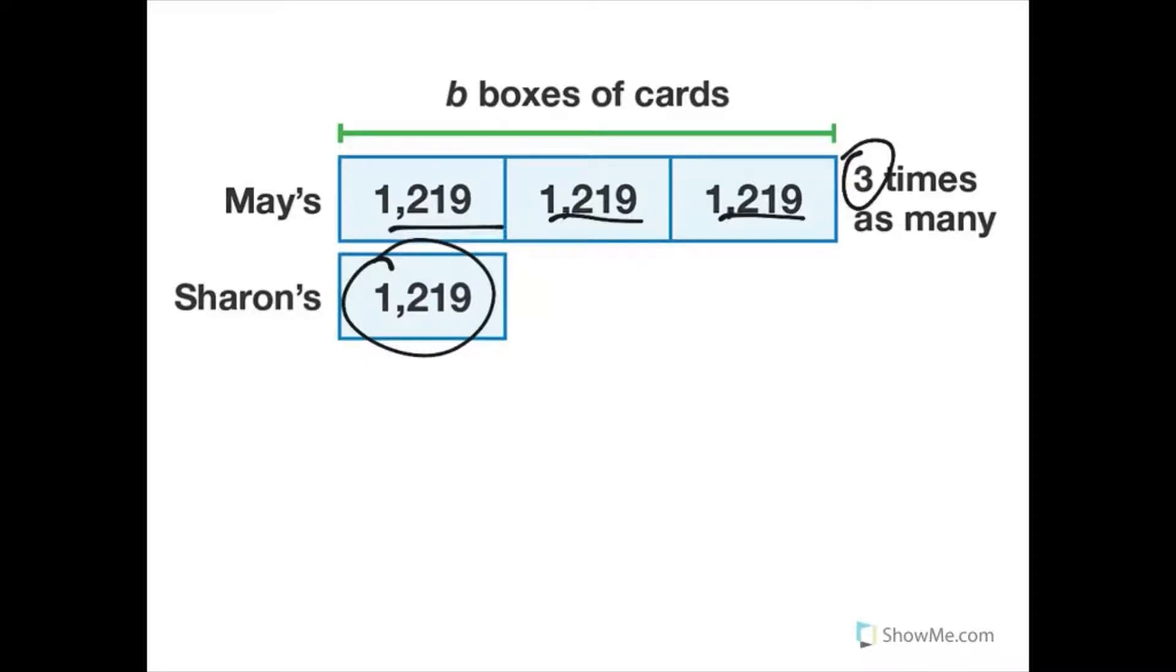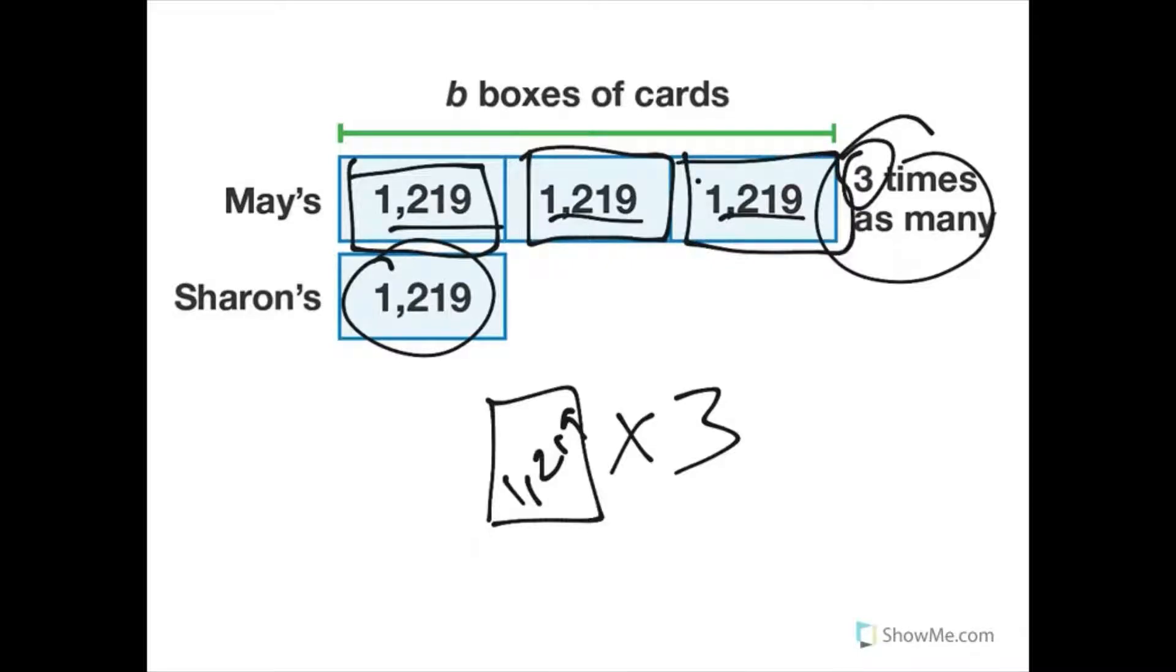Now when you have a small number that's being multiplied into that, a bar diagram is no problem. What I like to do is something like this. They got this box of cards and it's got 1,219. And May's has three times as many. So it's got three times as many, right? So I know that May's has three times as many boxes.